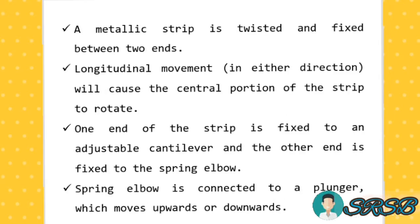Next we discuss the parts available in the Johansson Microkator. A metallic strip is twisted and fixed between two ends. The two sides have S-type elbow provisions. The metallic strip is connected between the two ends.